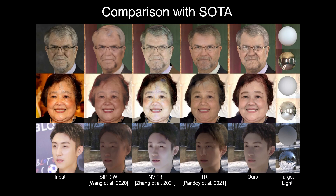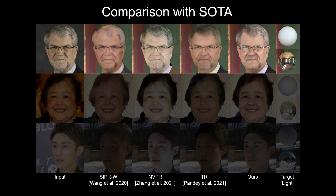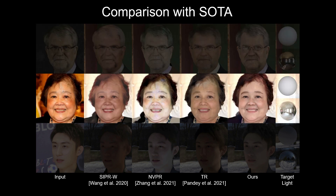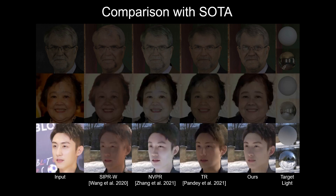We show side-by-side comparisons to state-of-the-art relighting methods. Note how our method produces plausible glares on the eyeglasses, generates fewer artifacts, especially around the forehead and the hair regions, and synthesizes outputs with more consistent lighting to the target environment map.